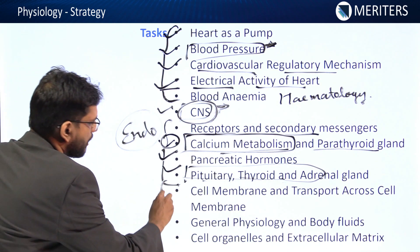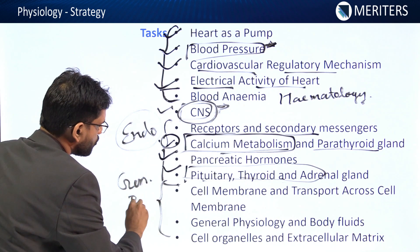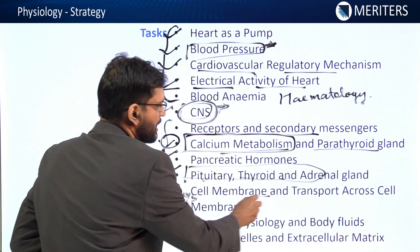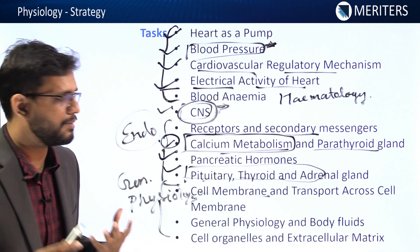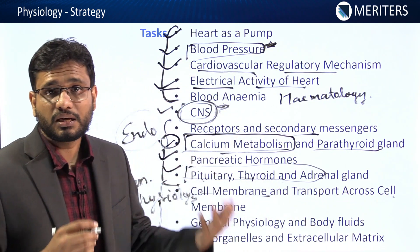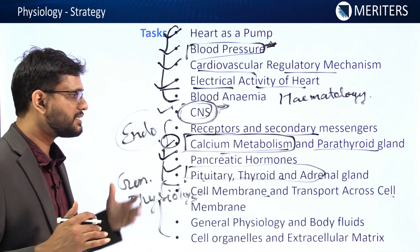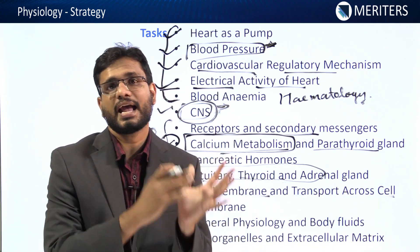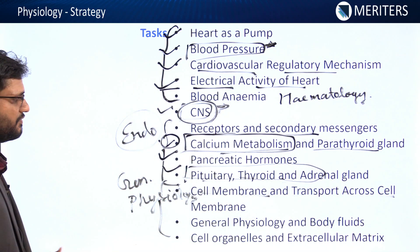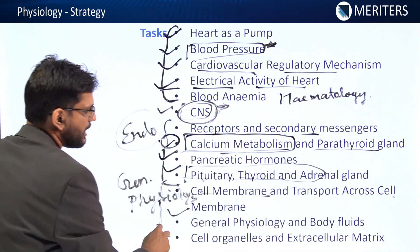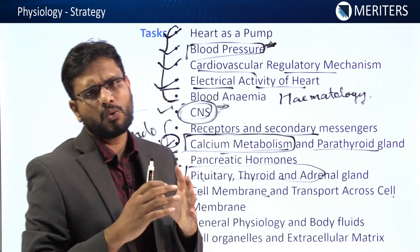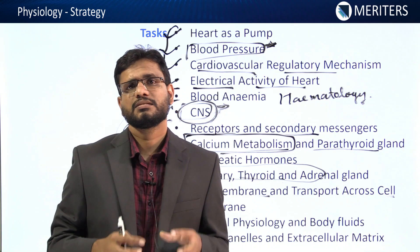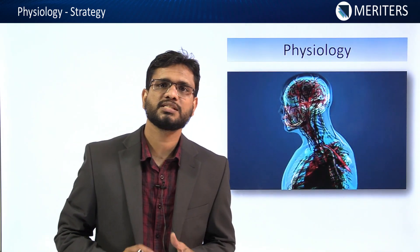Then comes general physiology, which will fetch you at least one question in your exam. The tasks cover cell membrane and transport across cell membrane — facilitated diffusion, different types of transport, co-transport, different messengers, and energy expenditure. General physiology also covers body fluids, organelles, and extracellular matrix — mostly asking about fluids and transport mechanisms.